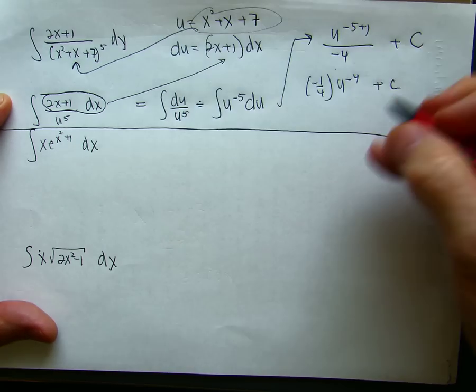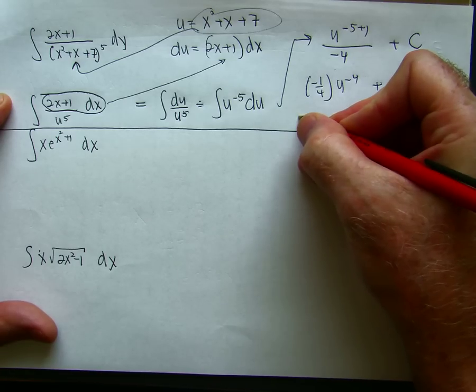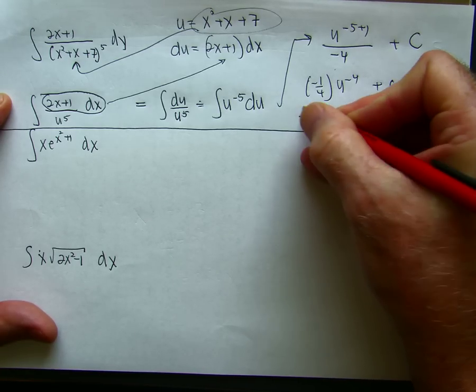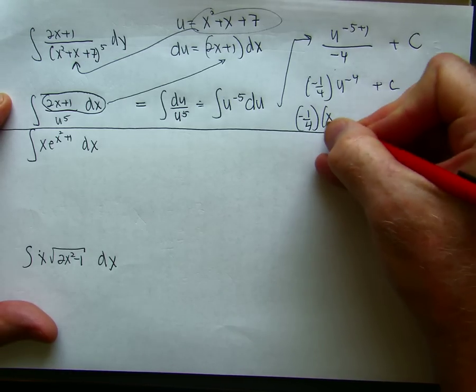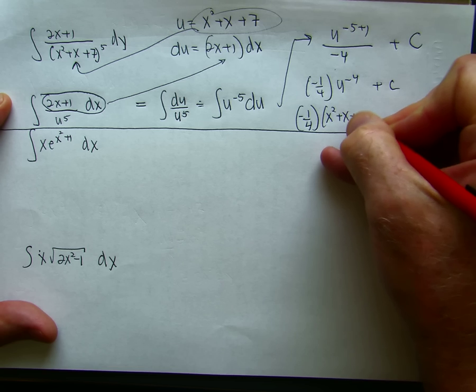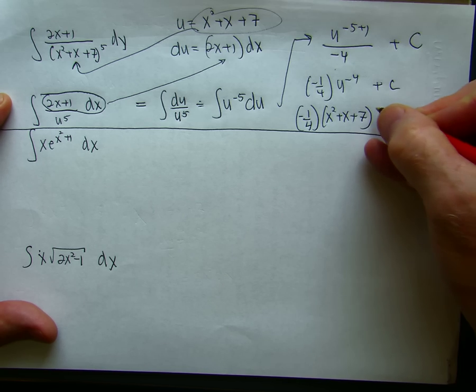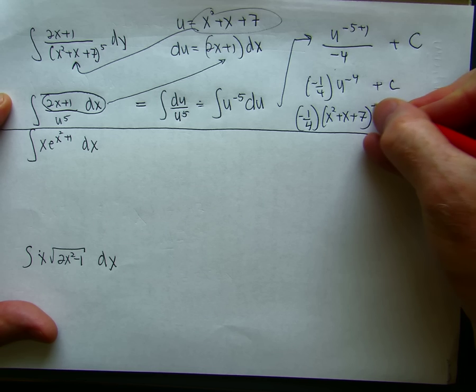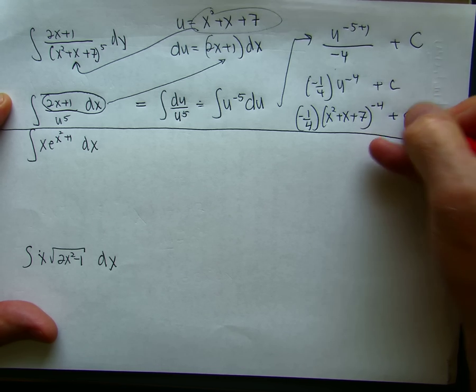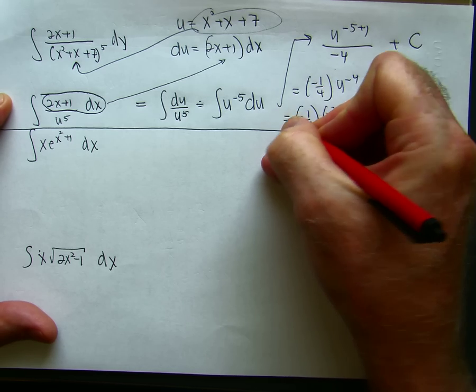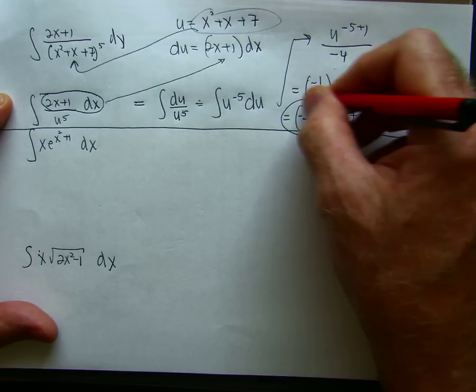Here's my u. So I get minus 1 fourth times x squared plus x plus 7 to the power of minus 4. Oh, these are all equal. Sorry. That's my answer. That's all it is.